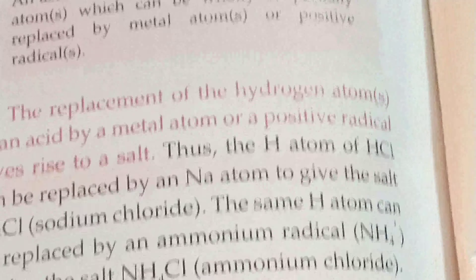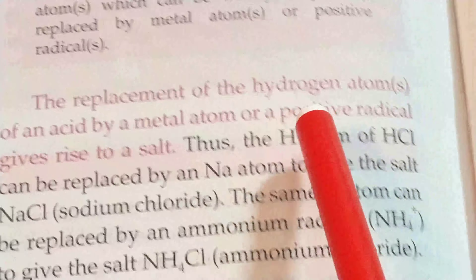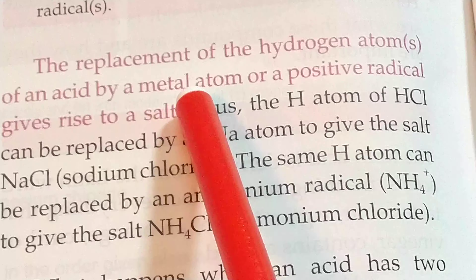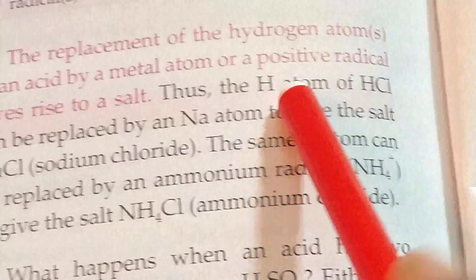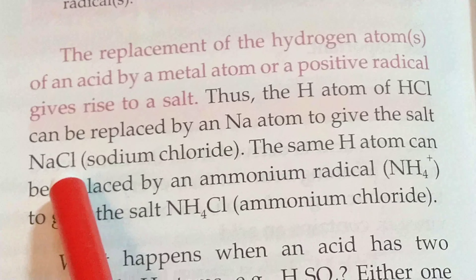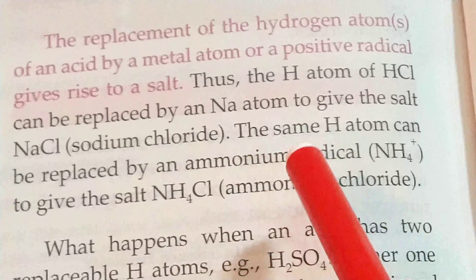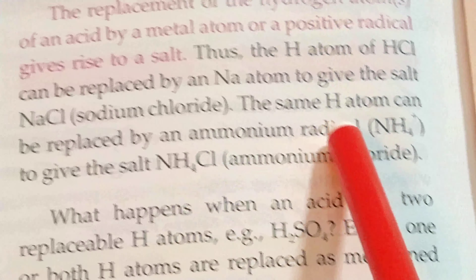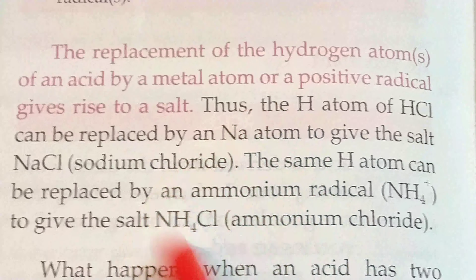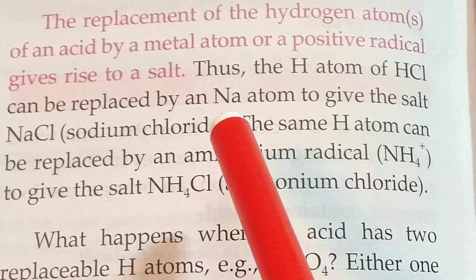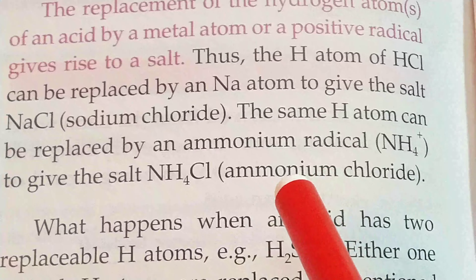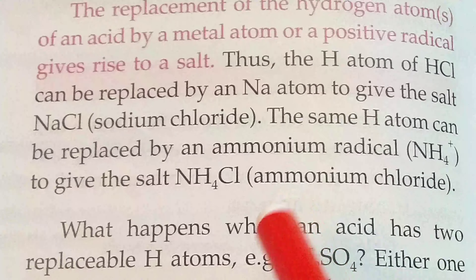The replacement of hydrogen atoms of an acid by metal atoms or positive radicals gives rise to salt. When acid hydrogen is replaced by metal atoms or positive radicals, they form salts. Thus, the hydrogen atoms of HCl can be replaced by a sodium atom to give a salt, that is NaCl — sodium chloride, or common salt. The same hydrogen atom can be replaced by an ammonium radical to give ammonium chloride, which is also a salt.